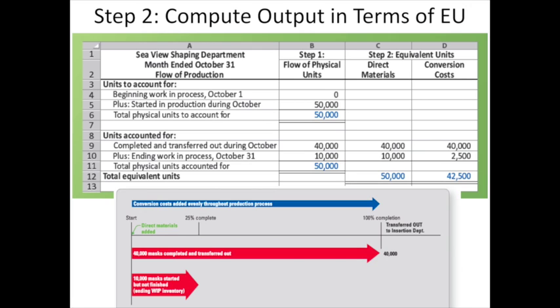For the 10,000 units in ending work in process, they are only 25% complete as to conversion costs, but they are 100% complete as to direct materials because direct materials were added at the beginning of the process. So we have 10,000 equivalent units as to materials, but only 25% of that was completed as to conversion — giving us 2,500 equivalent units for conversion (25% times 10,000). In total: 50,000 equivalent units as to direct materials, and 42,500 equivalent units as to conversion cost.